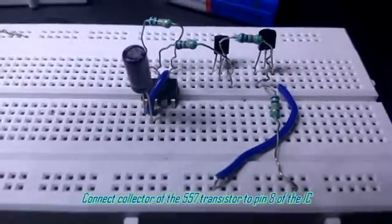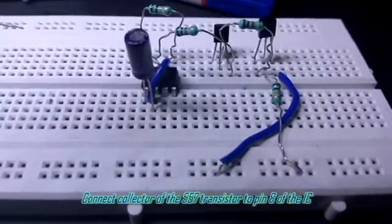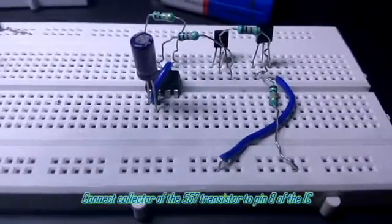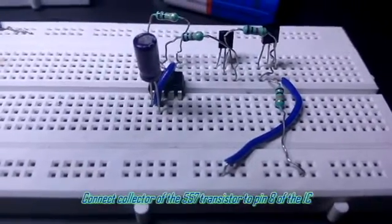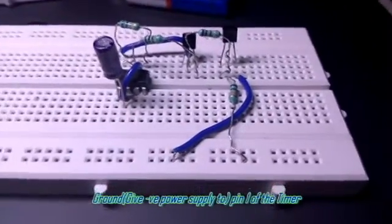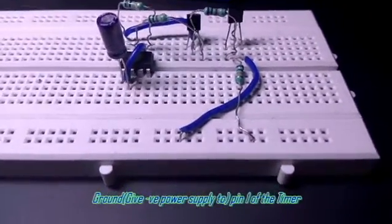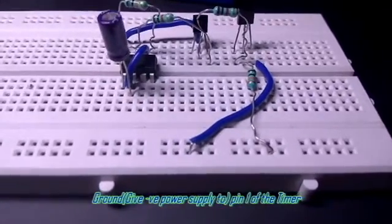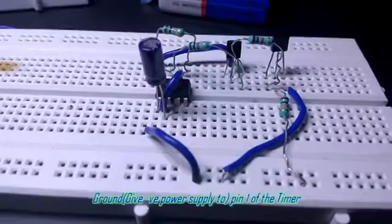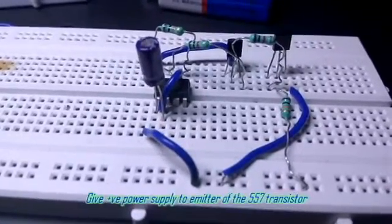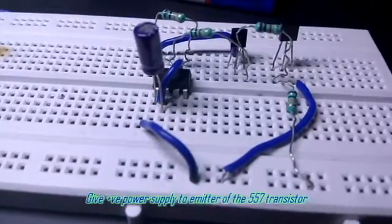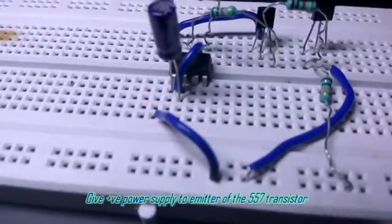Now connect pin 8 of the integrated circuit to collector of the 557 transistor. Give the positive power supply to the emitter of the first transistor.